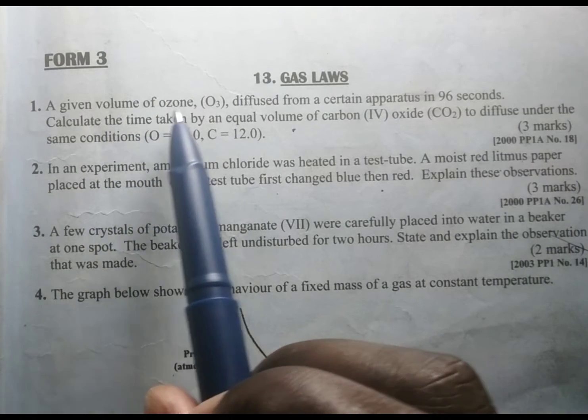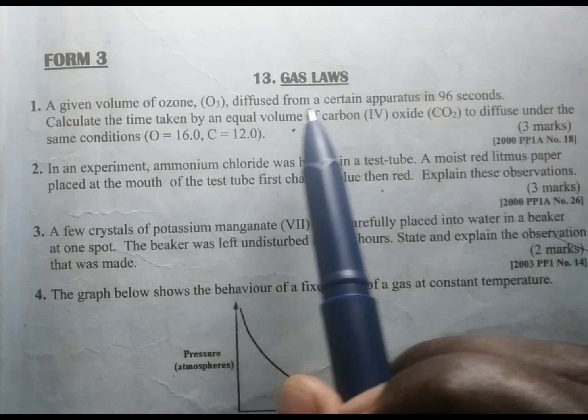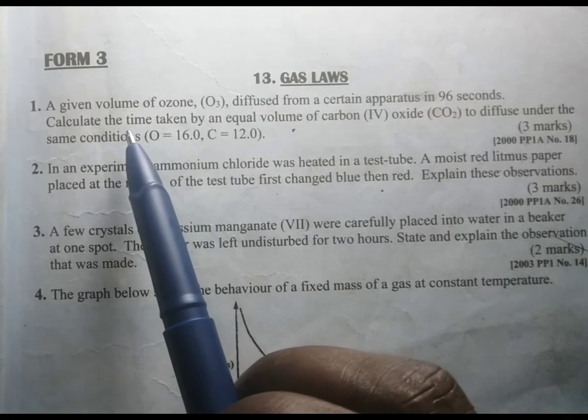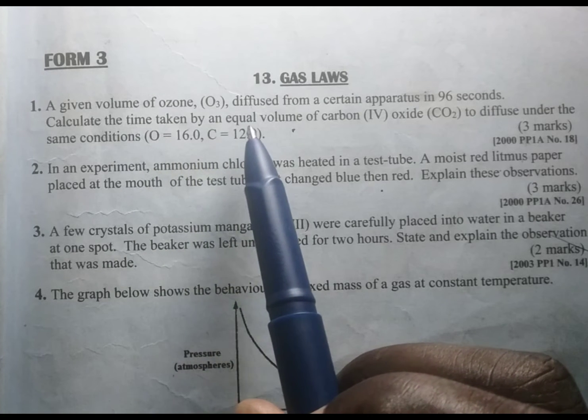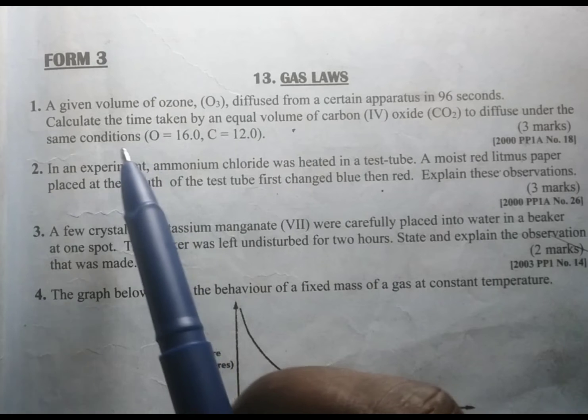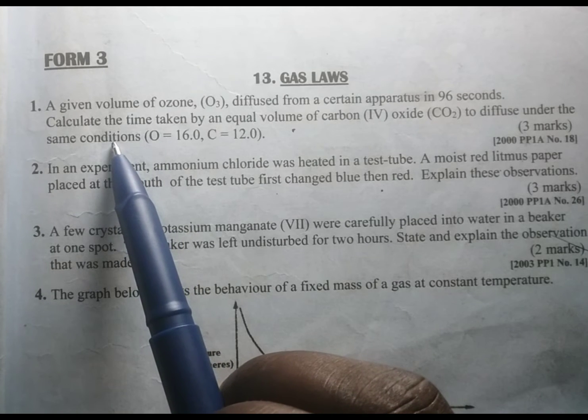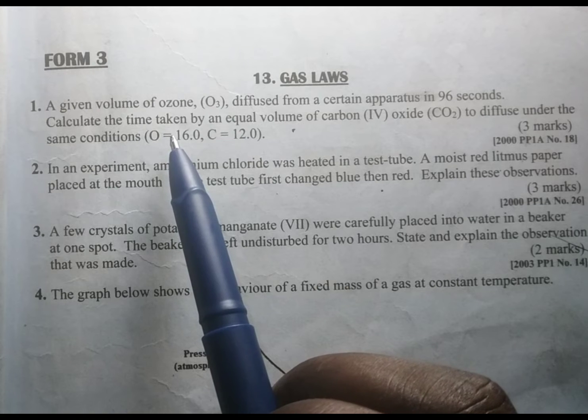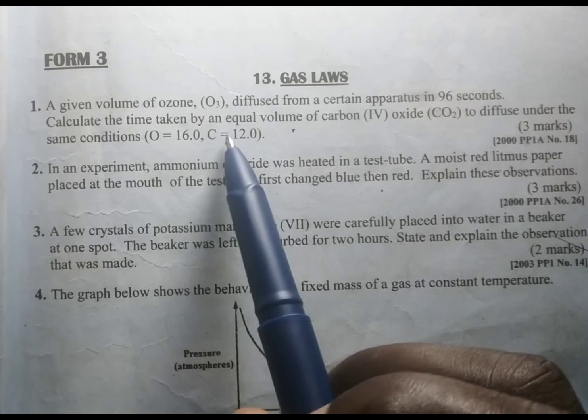A given volume of ozone diffused from a certain apparatus in 96 seconds. Calculate the time taken by an equal volume of carbon dioxide to diffuse under similar conditions. We have been given the relative atomic masses of oxygen and carbon.